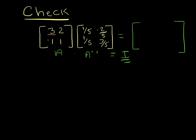I've got 3 times a fifth, which is 3 fifths, plus 2 times a fifth, which is 2 fifths. 3 fifths plus 2 fifths is 5 fifths, which is 1. And then I do 3 times negative 2 fifths is negative 6 fifths, plus 2 times 3 fifths, which is 6 fifths. So negative 6 fifths plus 6 fifths is a zero. And then I do negative 1 times 1 fifths is negative 1 fifths, plus 1 times 1 fifths, which is 1 fifths. So negative 1 fifths plus 1 fifths is a zero.